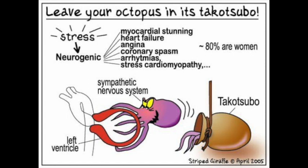Management: since Takotsubo initially presents like ACS, patients are treated with aspirin, nitro, beta blockers, heparin, and coronary angiography to rule out obstructive coronary artery disease. Since it is a transient condition, conservative and supportive care is the mainstay — beta blockers and ACE inhibitors for three to six months with serial imaging. Anticoagulation is used in some patients with left ventricular dysfunction or ejection fraction under 30%, or if thrombus is present.